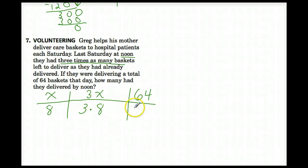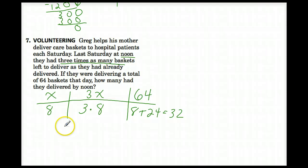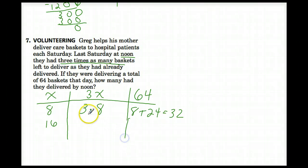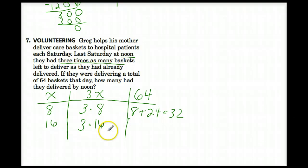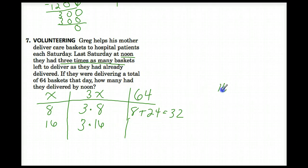32 is not 64, but notice that 32 is exactly half of 64. So now I'm going to try 16 — just doubling our number. 16 baskets before noon, 3 times 16 baskets after noon. What is 3 times 16? That's 48. So we have 16 plus 48.